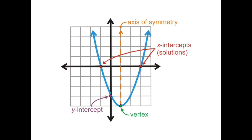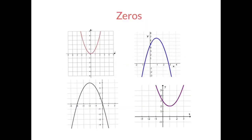Another part of the parabola that we always look into is called the x-intercepts or solutions. We also call these the zeros, and they are simply where the parabola crosses the x-axis. For example, here we have four different parabolas. Looking at my first parabola, it only touches the x-axis in one point, so there is only one zero, and that zero is the point zero comma zero.